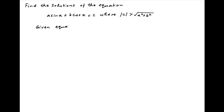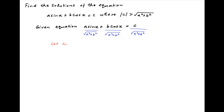The given equation is a·sin(x) + b·cos(x) = c. Divide both the left-hand side and the right-hand side by the square root of a² + b². Let a upon square root of a² + b², which is a number less than 1, be equal to cos(α).